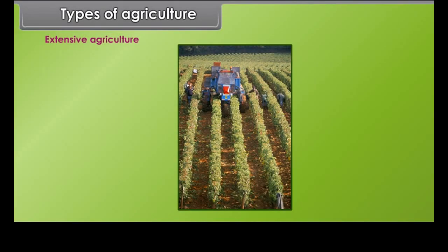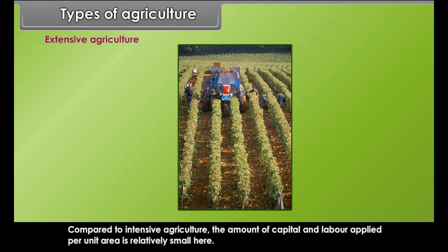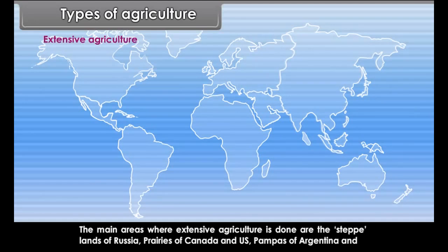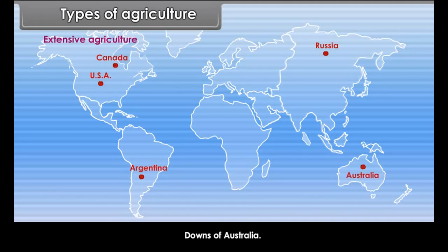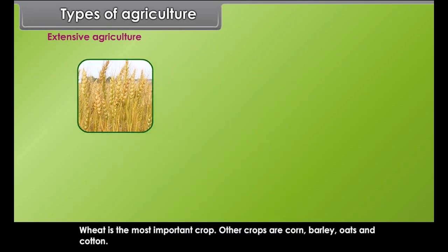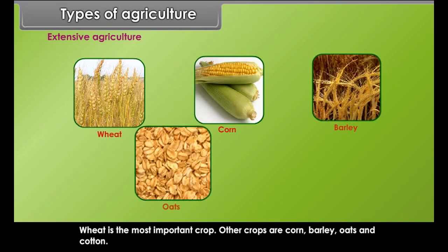Compared to intensive agriculture, the amount of capital and labor applied per unit area is relatively small in extensive agriculture. The main areas where extensive agriculture is done are the steppe lands of Russia, prairies of Canada and the US, pampas of Argentina, and downs of Australia. Wheat is the most important crop; other crops are corn, barley, oats and cotton. Because of less labor and more mechanization, per-person yields are quite high.